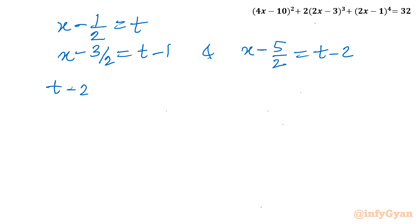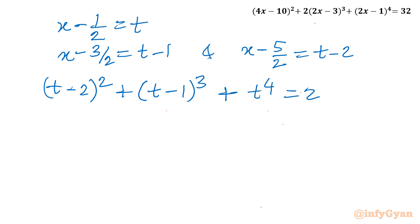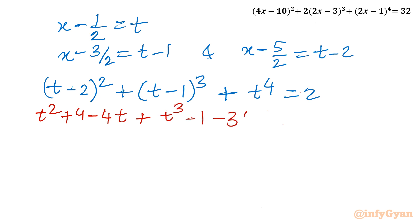So the equation becomes: (t - 2)² + (t - 1)³ + t⁴ = 2. Once I expand this it will convert into a quartic equation. Expanding (a - b)² gives a² + b² - 2ab, and (a - b)³ gives a³ - b³ - 3a²b + 3ab². Then plus t⁴ equal to 2.